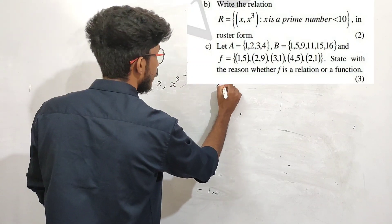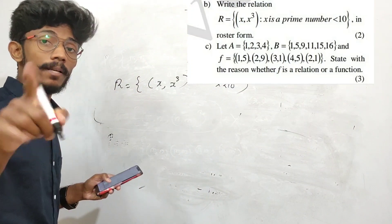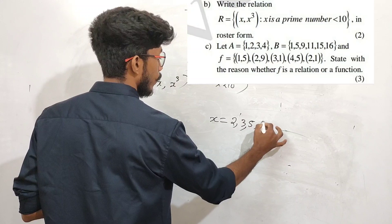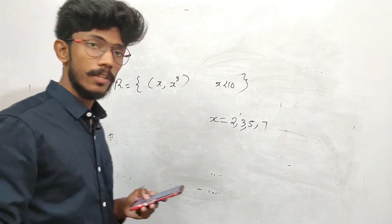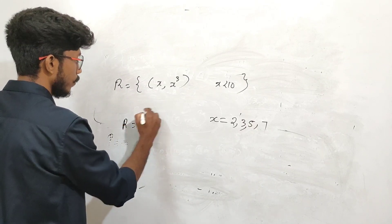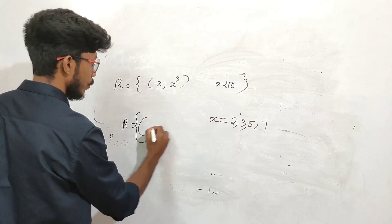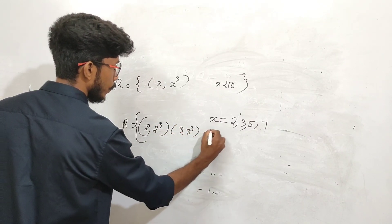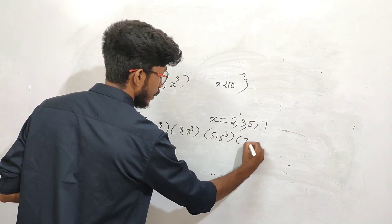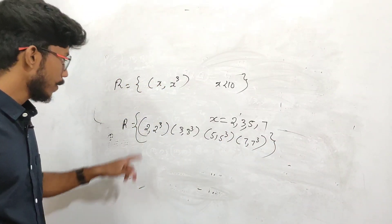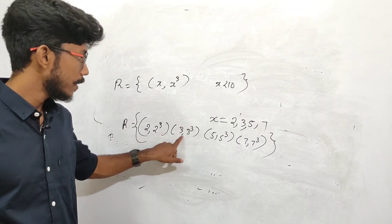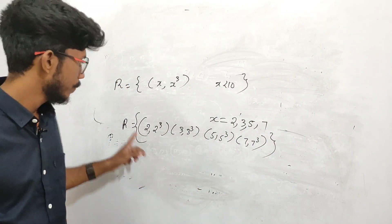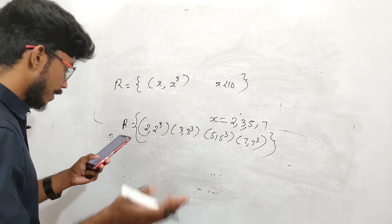x is a prime number less than 10. The prime numbers less than 10 are 2, 3, 5, 7. The relation is y equals x cube. So the pairs are: 2, 2 cube; 3, 3 cube; 5, 5 cube; 7, 7 cube. Calculate the cubes and write in roster form.